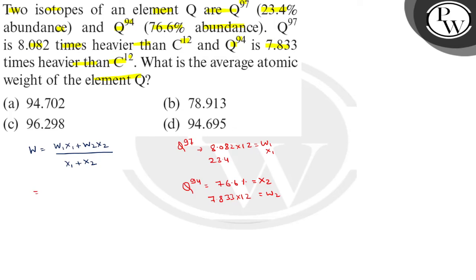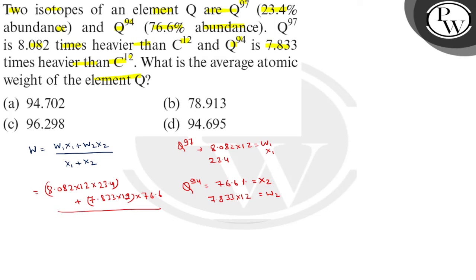So we calculate: W1 = 8.082 × 12, times 23.4, plus W2 = 7.833 × 12, times 76.6, divided by (23.4 + 76.6).